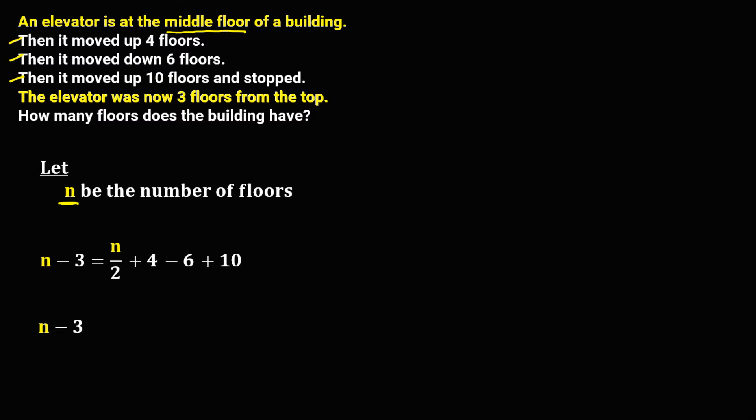So to solve for n, we have n minus 3 equals n over 2. Then add all these numbers, so 4 minus 6, that's negative 2. So negative 2 plus 10, that's positive 8.